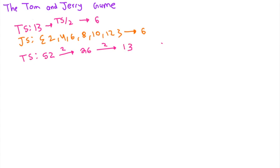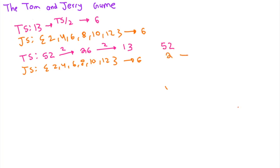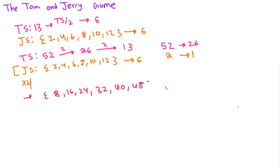We can see that the set of solutions for JS is the exact same, and we have 6 possibilities. Let's try inputting one value of TS and JS together. Take our TS value of 52 and a JS value — let's divide both by 2. JS becomes 1 and TS becomes 26. In this case, it is a loss for Jerry. We can call the value set for JS the simplified set for TS. TS has been divided by 2 twice, so in total it has been divided by 4. We would have to multiply each value in the set of JS by 4 to get the actual original values, which would be 8, 16, 24, 32, 40, and 48.